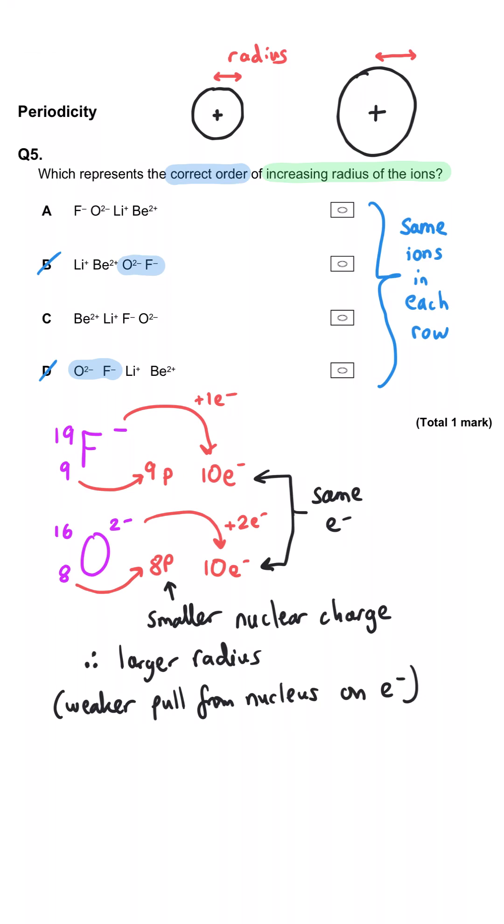So then we need to consider between A and C whether the fluoride and oxide ions would be bigger or the lithium and beryllium ions would be bigger.